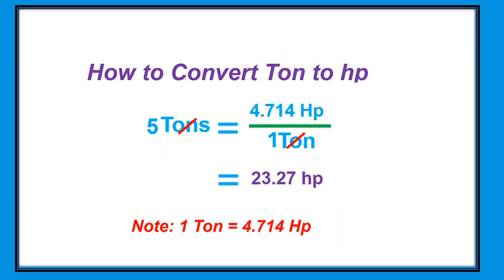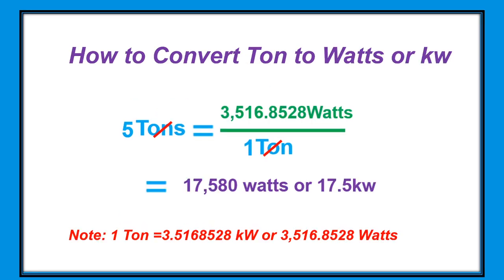This melting occurs over 24 hours. Now let's proceed to conversion from tons to horsepower. Note: one ton equals 4.714 horsepower. For example, 5 tons times 4.714 horsepower per ton — canceling the tons — gives us 23.25 horsepower. So 5 tons is equal to 23.25 horsepower.